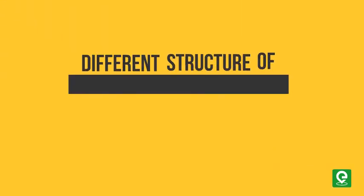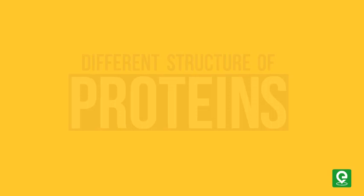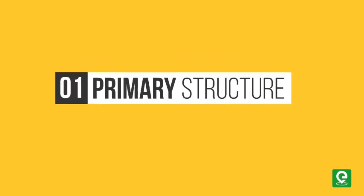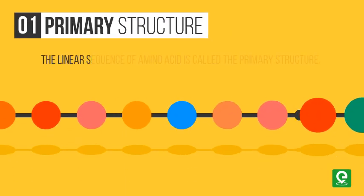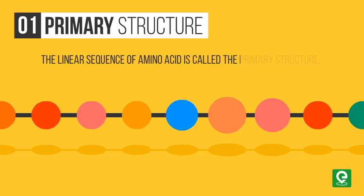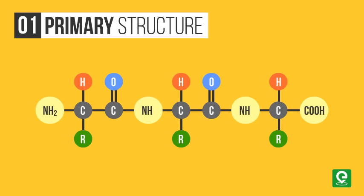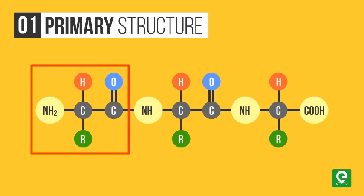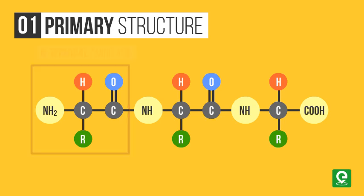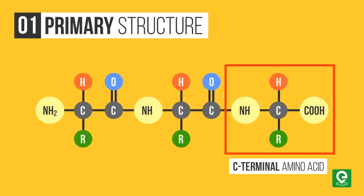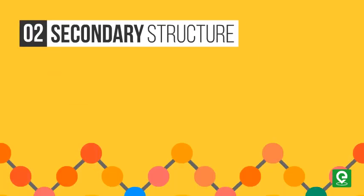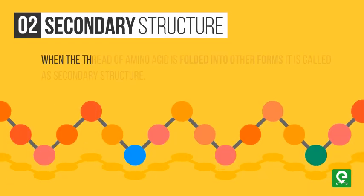Let's learn about the different structures of proteins. Primary structure: the linear sequence of amino acids is called the primary structure. Here, protein is imagined as a line — the left end is represented by the first amino acid, called the N-terminal amino acid, and the right end by the last amino acid, called the C-terminal amino acid.